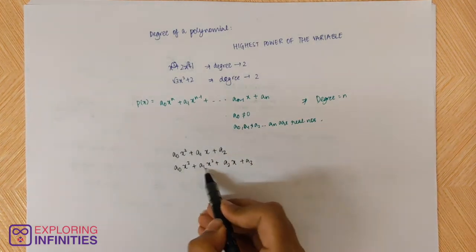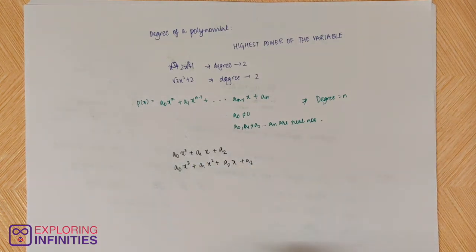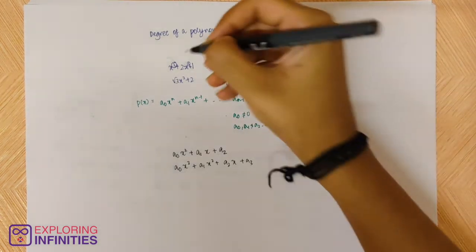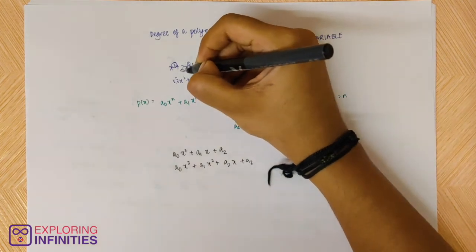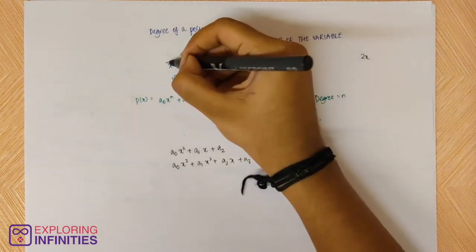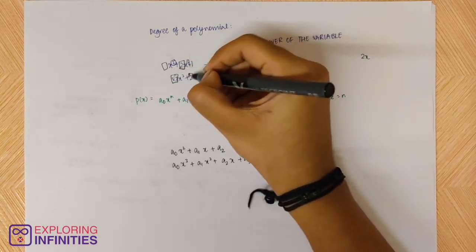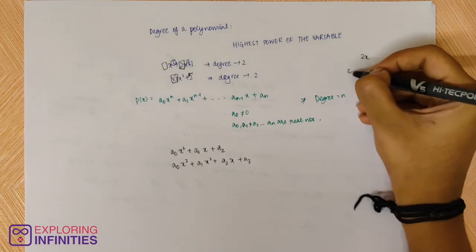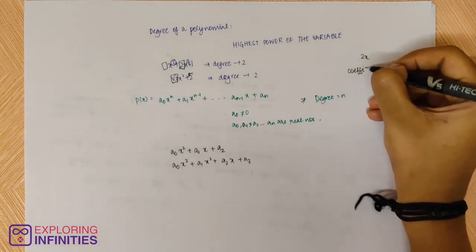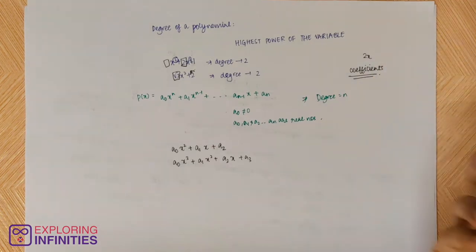a₀, a₁, and so on are basically constants for us — or you can also call them coefficients. An essential thing to learn is the number attached to the variable, like 2 in 2x or root 3 in root 3 · x. These numbers are not variables; they are called coefficients of the variable.